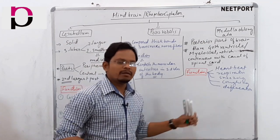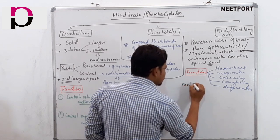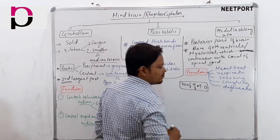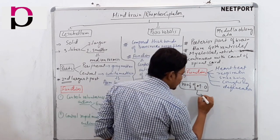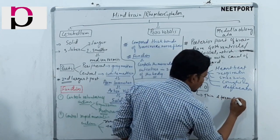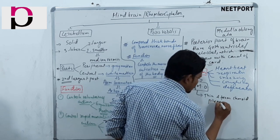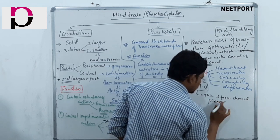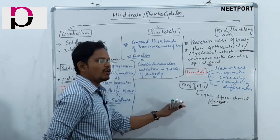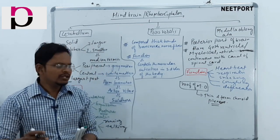Now let's talk about the roof of medulla oblongata. The roof of medulla oblongata is thin and it forms the choroid plexus.